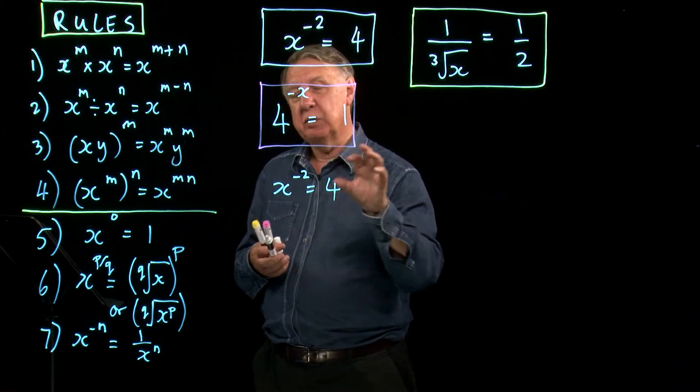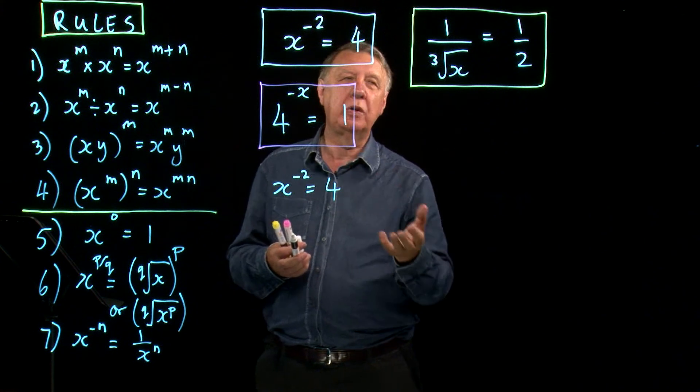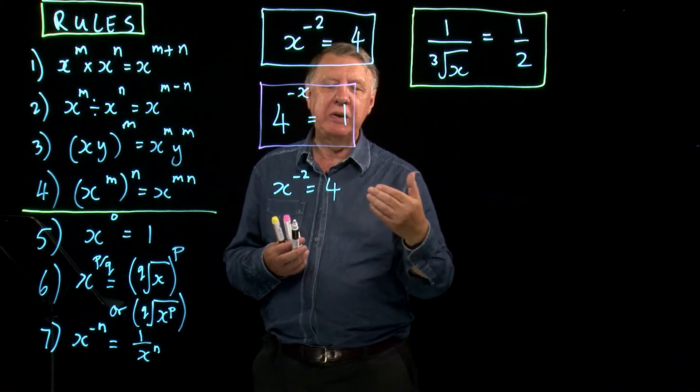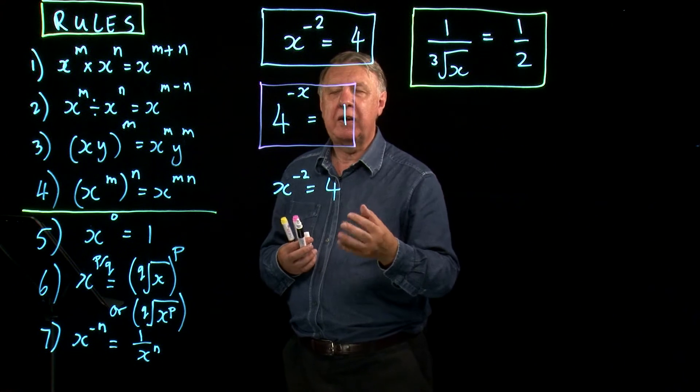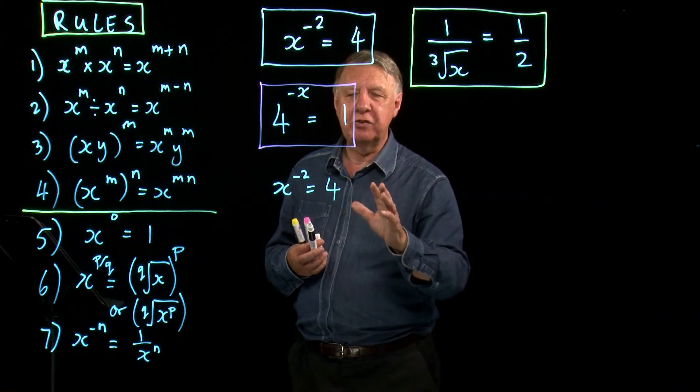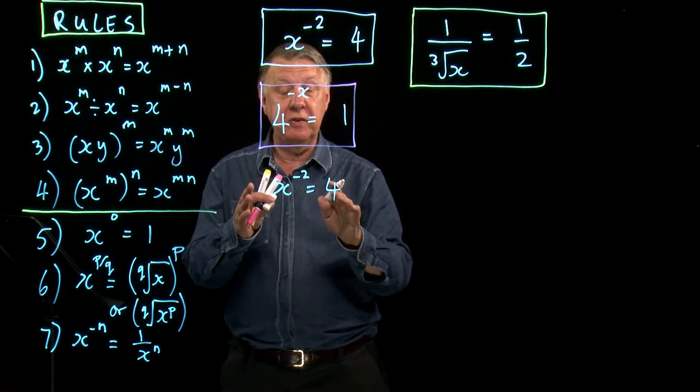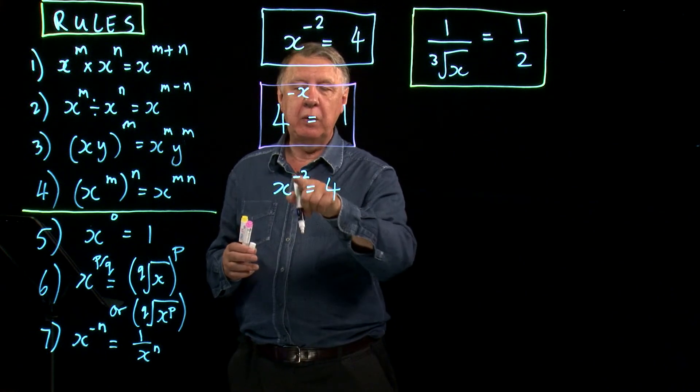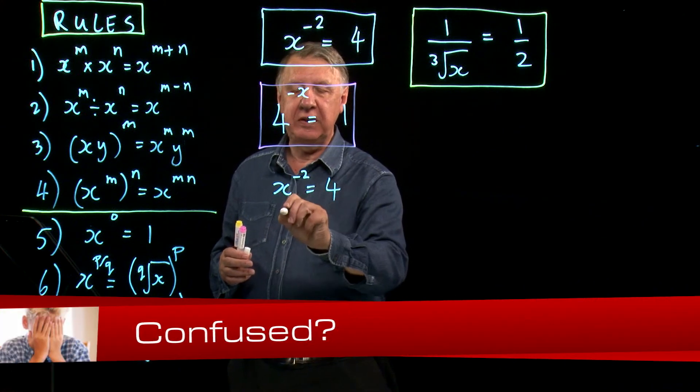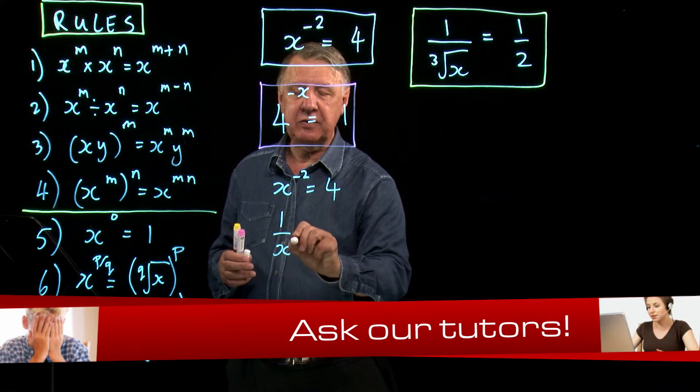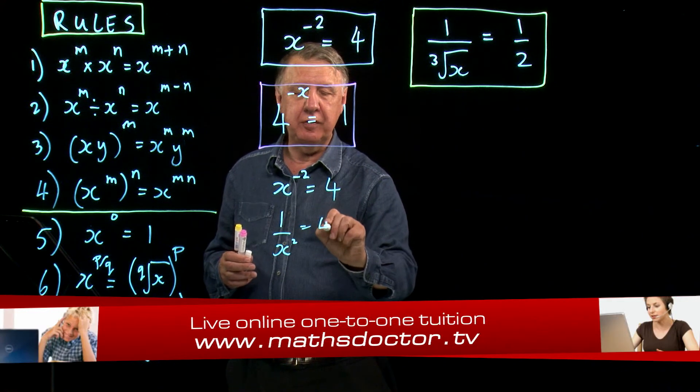right, this is this sort of equation, this is what you do to it. Because they all have variations within them. So what you need to do is to understand what this is asking you to do. Now what does x to the negative two mean? It means 1 over x squared equals 4.